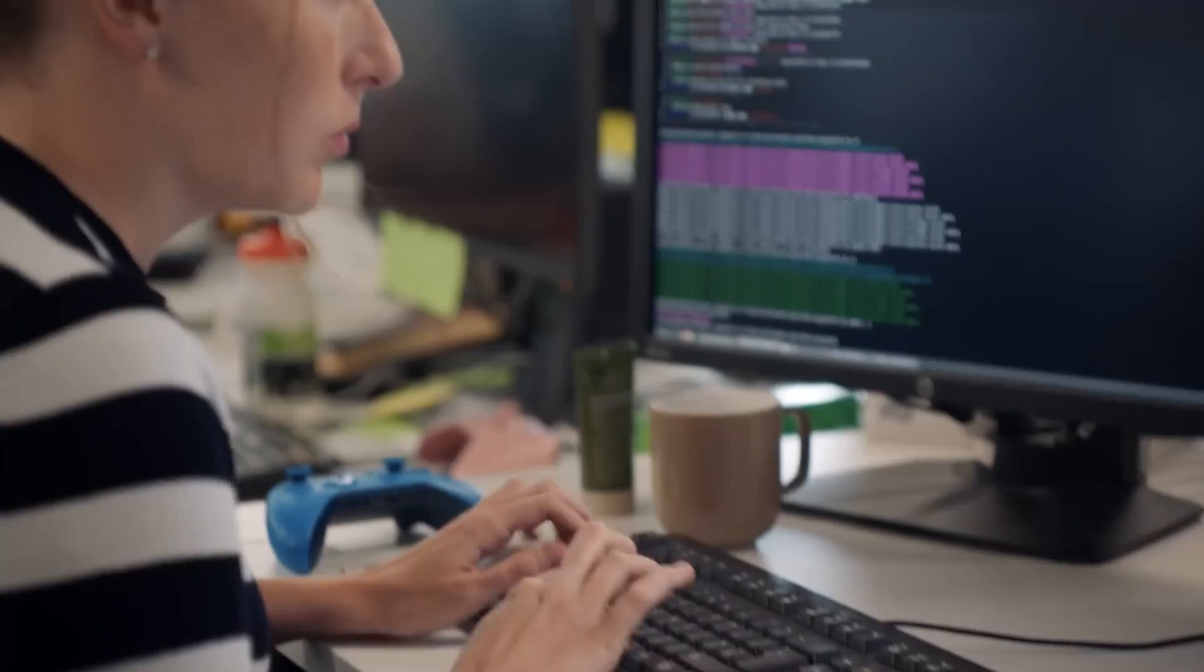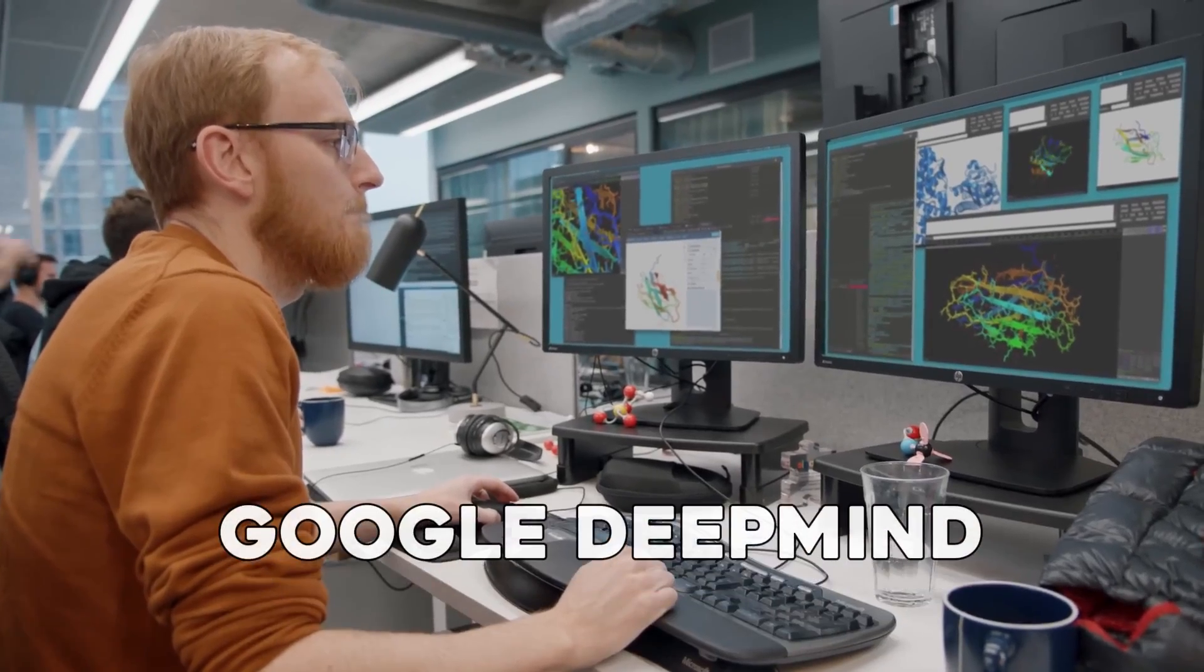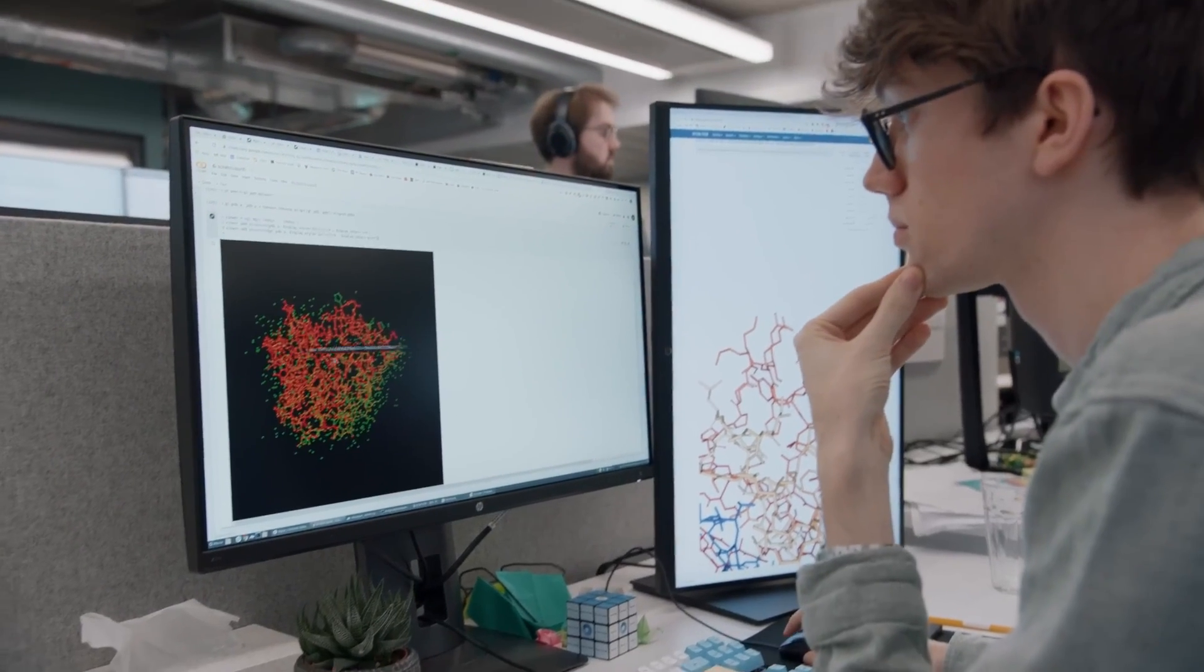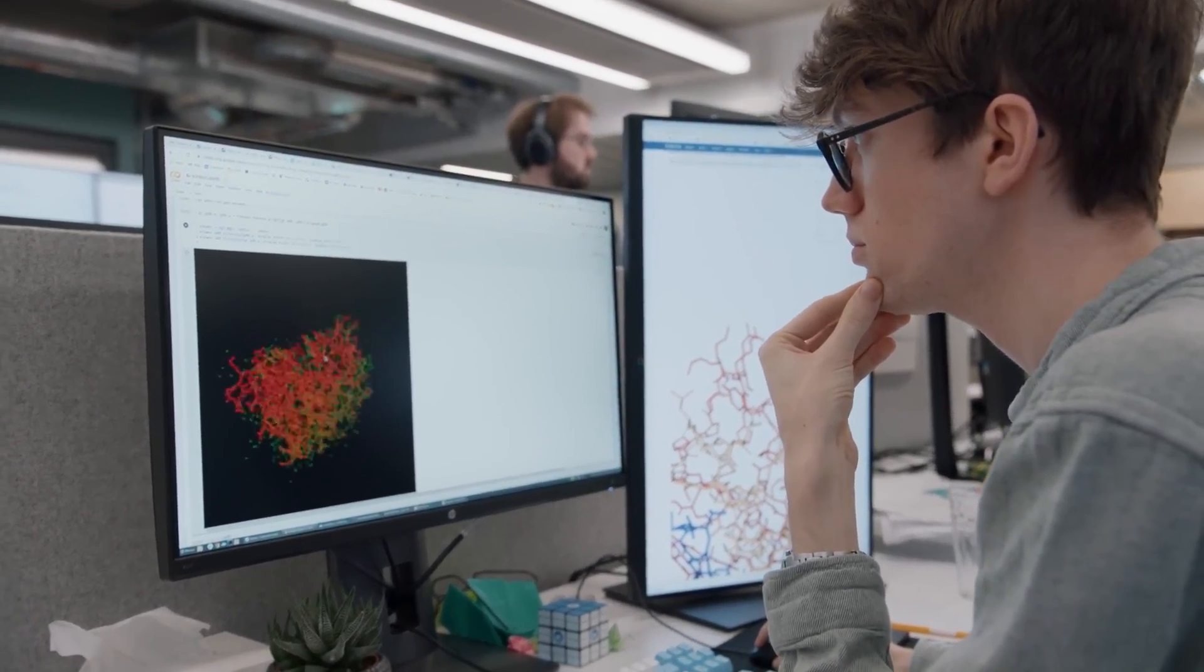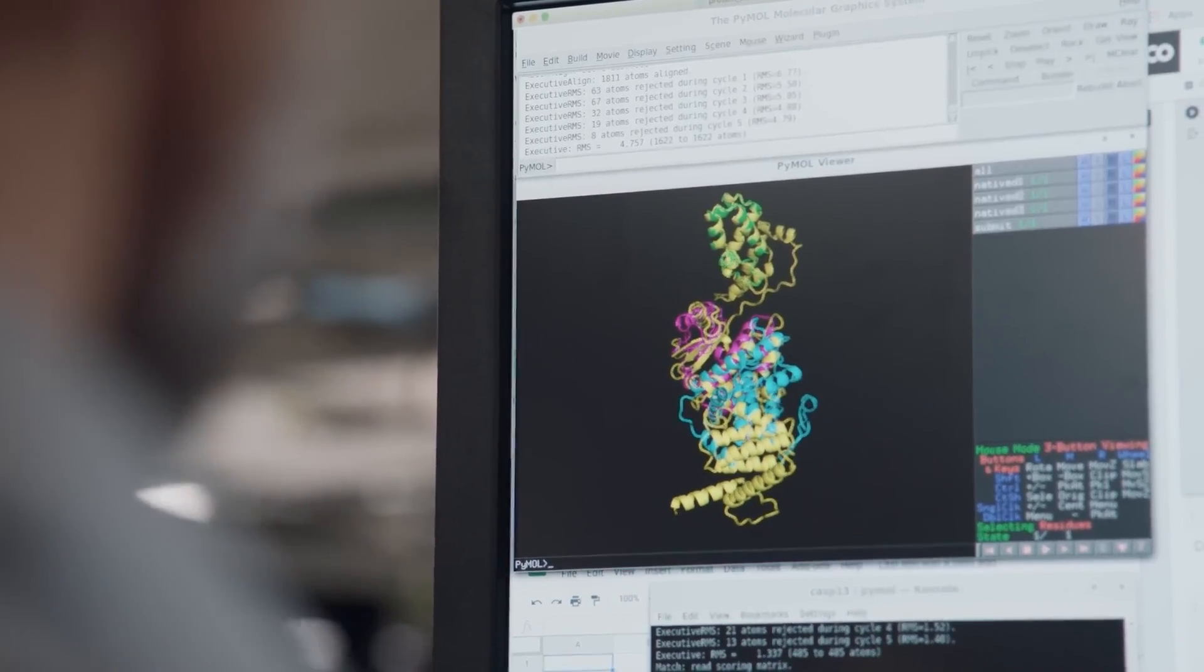Enter AlphaFold3, a super smart AI created by Google DeepMind. This AI is like a master puzzle solver for biology. It can predict how proteins and other important molecules shape up and interact with each other.